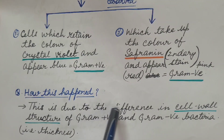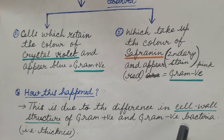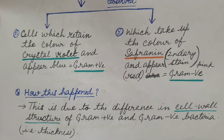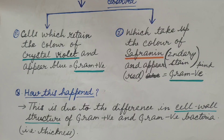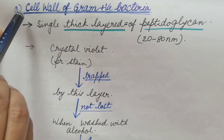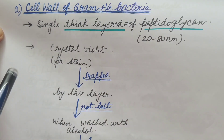This difference is due to the difference in the cell wall structure — specifically the cell wall thickness — of gram positive and gram negative bacteria. Let us now see the structure of gram positive and gram negative bacteria one by one to understand how the gram staining method works on them.